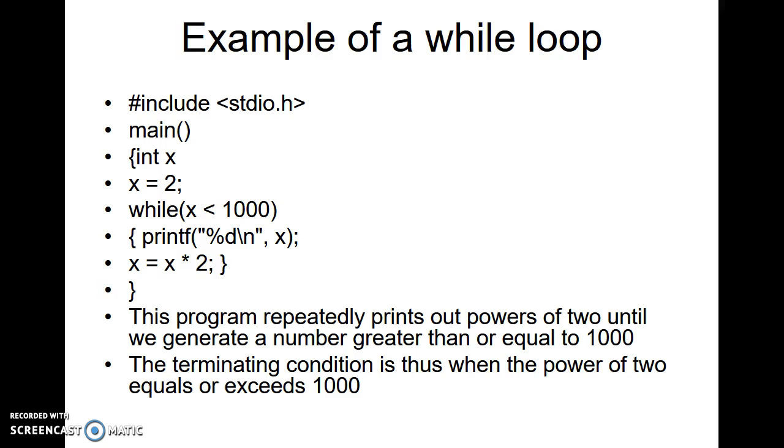This is an example of a while loop. Just see the program, but be careful about the program. Here, this program repeatedly prints out powers of 2 until we generate a number greater than or equal to 1000. The terminating condition is thus when the power of 2 equals or exceeds 1000.